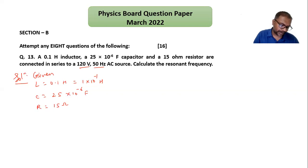For resonance frequency, the formula is f equals 1 over 2π times the square root of LC. This is the formula. Now let me substitute the values: 1 over 2π...